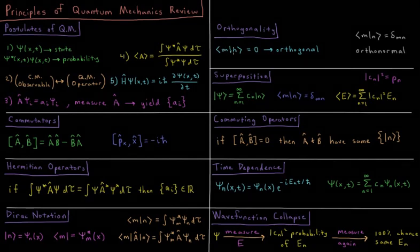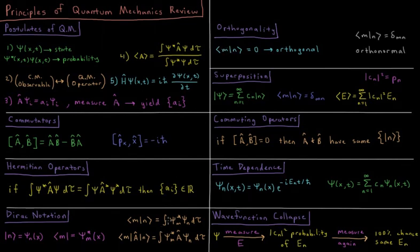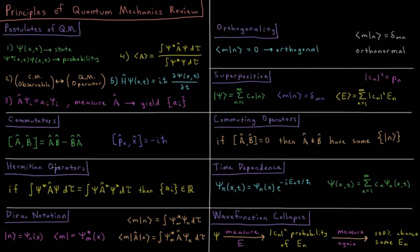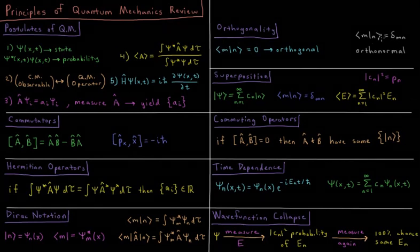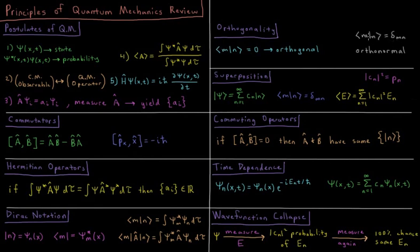If the overlap of two basis functions, their integral over all space of their product, is equal to zero, then they are said to be orthogonal to one another. For Hermitian operators, if you have a different eigenvalue, then they are required to be orthogonal to one another. If they are one when you have m equals n and zero otherwise, then they are both normalized and orthogonal, which is called orthonormal.